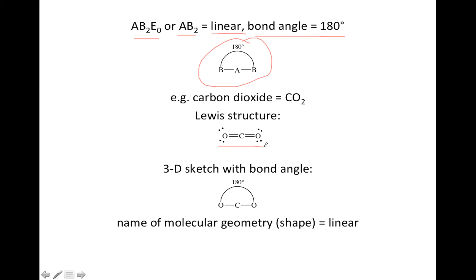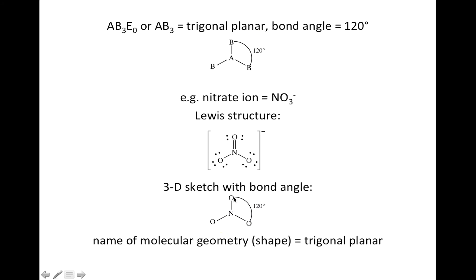A classic example of this is carbon dioxide. Here's the Lewis structure — you see there are two atoms bonded to the center and no lone pairs on the carbon, so it's going to be AB2. All I'll do is redraw the drawing from above but put in the real elements, carbon and oxygen. When you do the sketch, you don't distinguish between single and double bonds — you just draw a line between the atoms. The shape is linear, as determined by where the atoms are; they're all in a straight line.